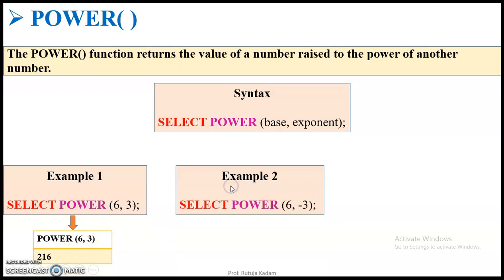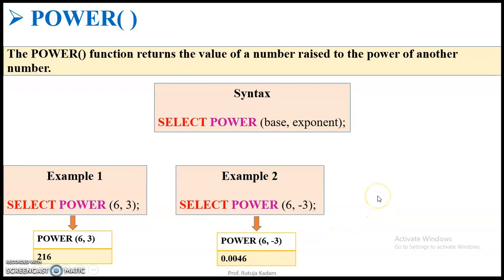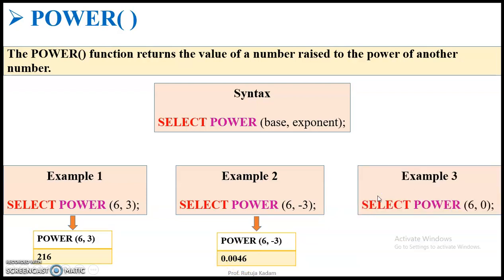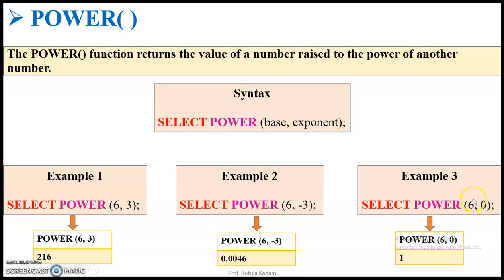If I give the exponent as minus 3, then 6 to the power of minus 3 gives us 0.0046. Now if I give the exponent as 0, anything raised to 0 gives the value 1. So 6 raised to 0 is 1.